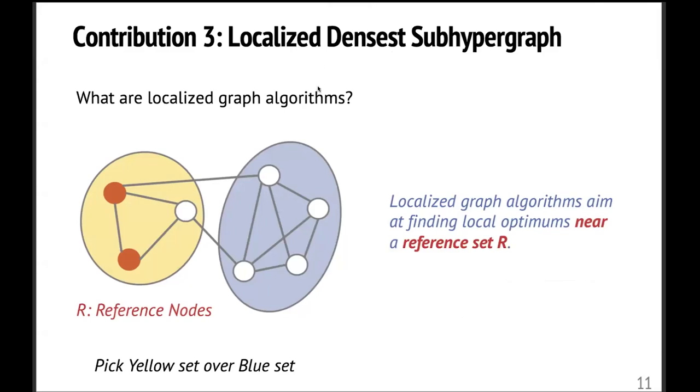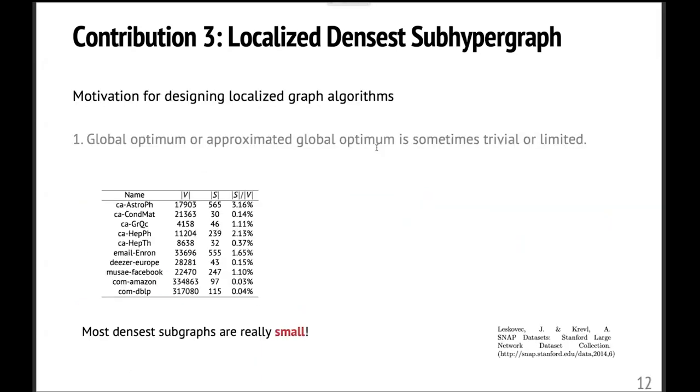And our third contribution is that we study a localized densest subhypergraph objective. And we propose some corresponding algorithm to solve them. So first, let me motivate it. So let me introduce what are localized graph algorithms. So basically, localized graph algorithms are trying to find some special structures near some local region indexed by some reference set R. Here on the left hand side, I give one example. So let's say we are looking for the densest subgraph. The global optimum here is a blue set. But if we are interested in the local region around the reference set marked in orange, then we may output the yellow set since it's closer to the local region. So by choosing different reference set, then we can find a lot of very diverse dense structures.